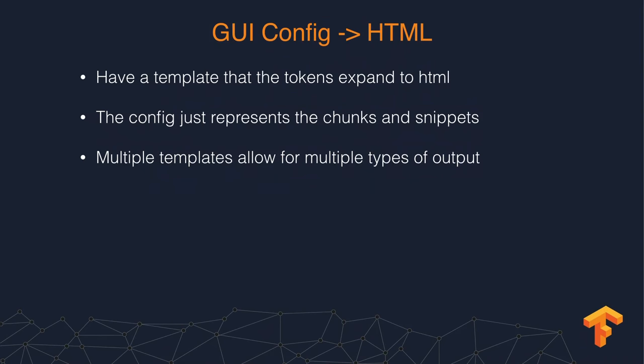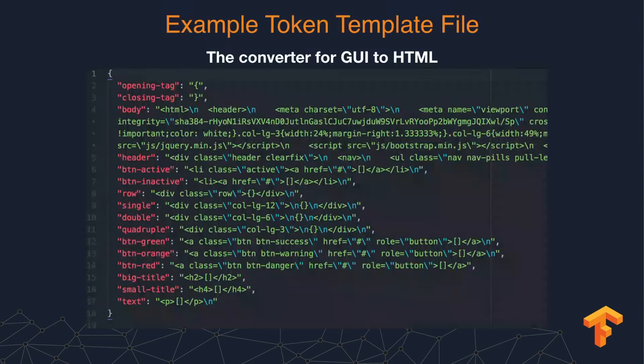We take that GUI and use a template to turn it back into HTML. The GUI config represents chunks and snippets of HTML that get assembled together. We need a template file that maps from those predicted tokens to actual raw HTML.